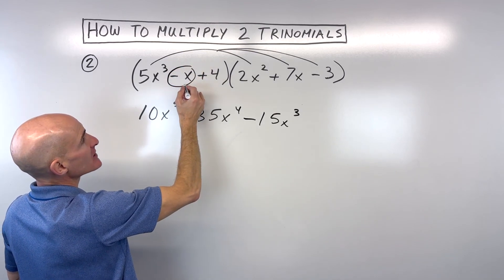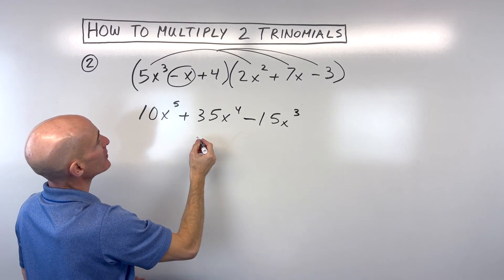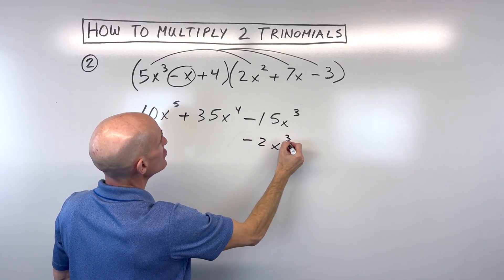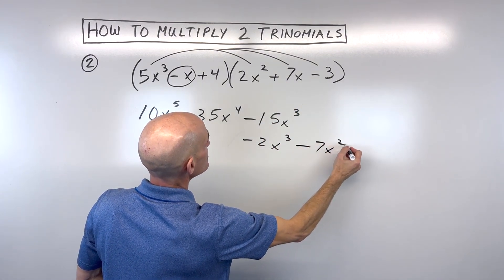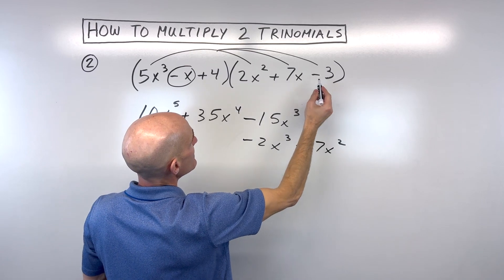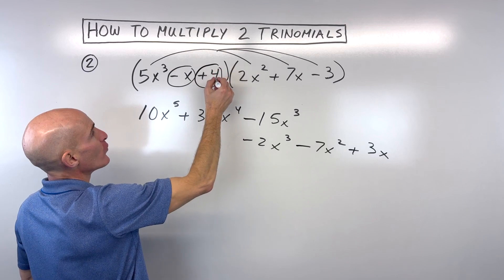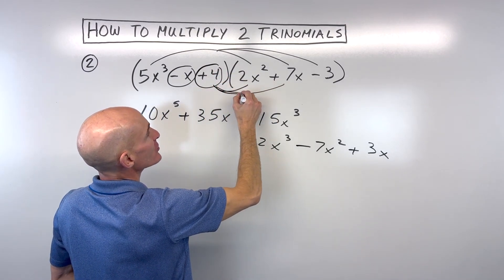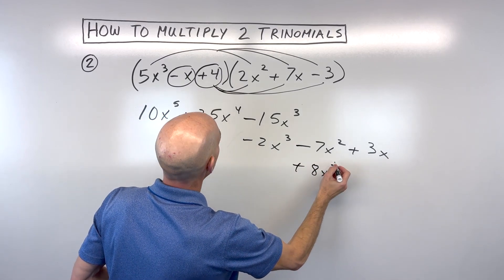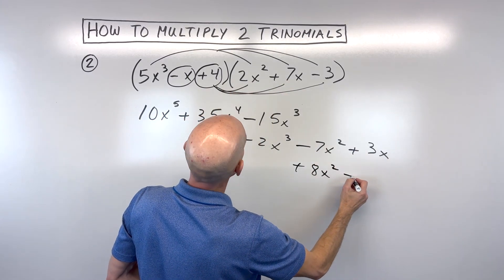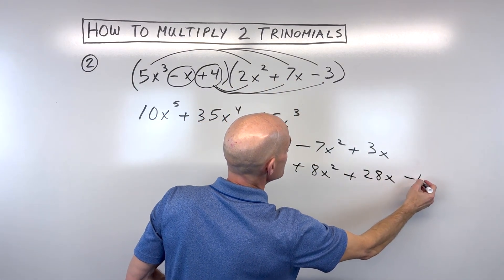Now we're going to go with negative x. We're going to distribute that to all three terms. Negative x times 2x squared is negative 2x cubed. Negative x times 7x is negative 7x squared. Negative x times negative 3 is positive 3x. Now we're going to take the positive 4 and distribute it to all three terms. 4 times 2x squared gives us 8x squared. 4 times 7x is 28x. And 4 times negative 3 is negative 12.